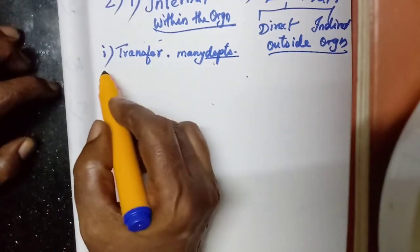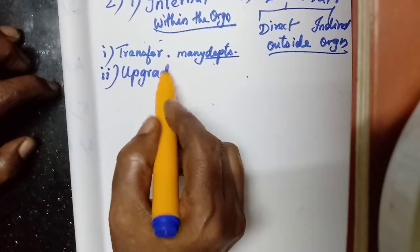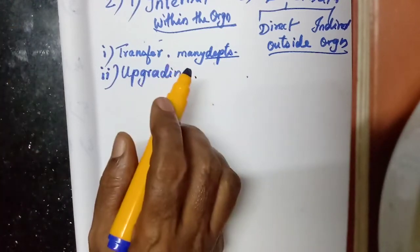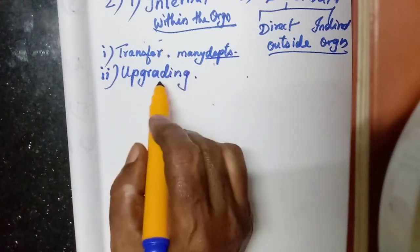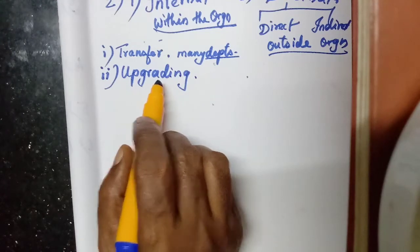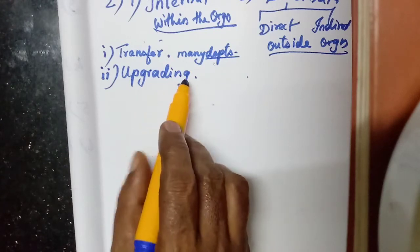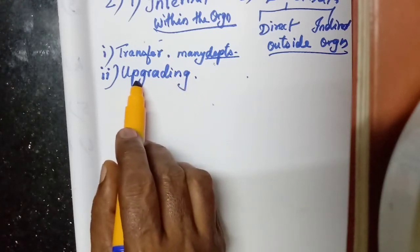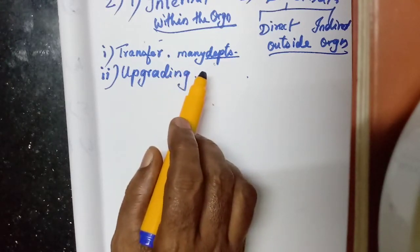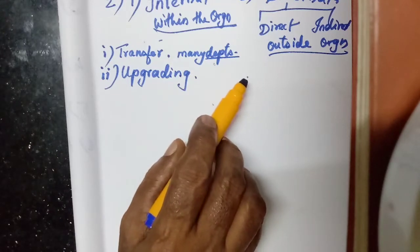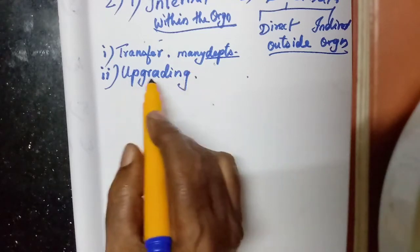The second internal source is upgrading. When they do the performance appraisal — when they evaluate the performance of employees — some employees can be upgraded. They will be promoted from one lower department to a higher position. That is called upgrading, from a lower position to a higher position.